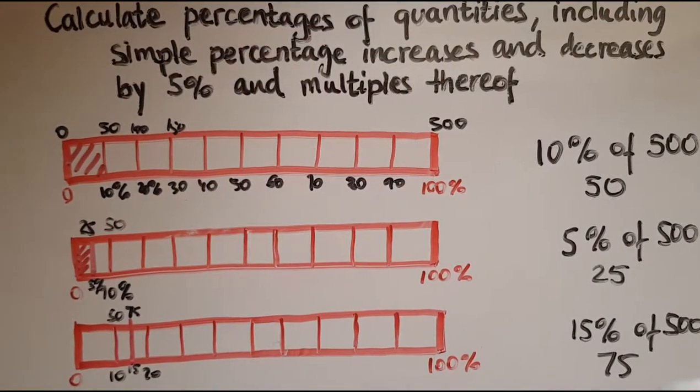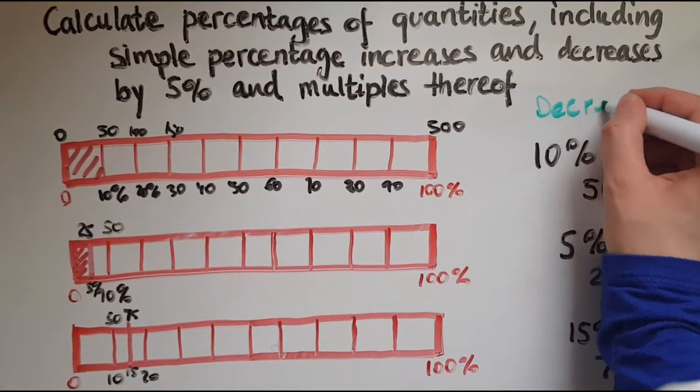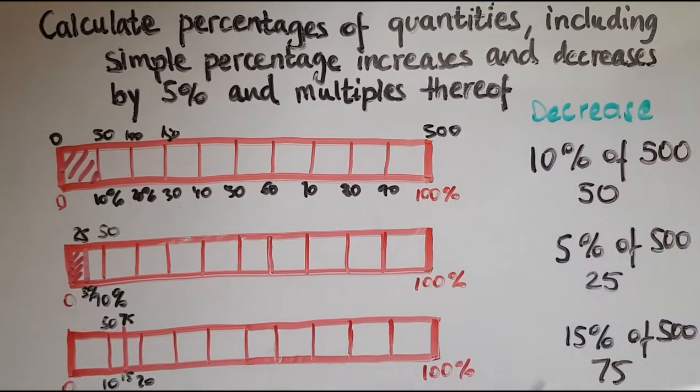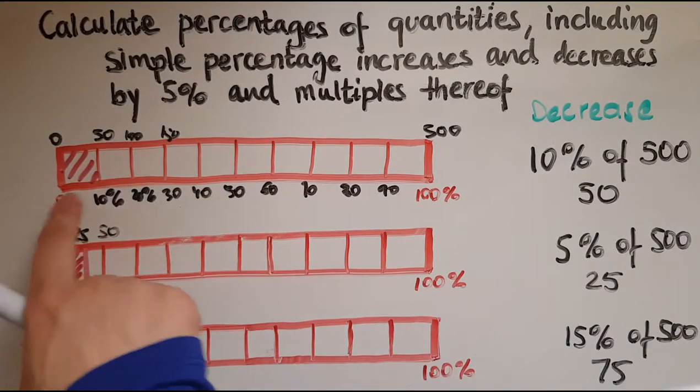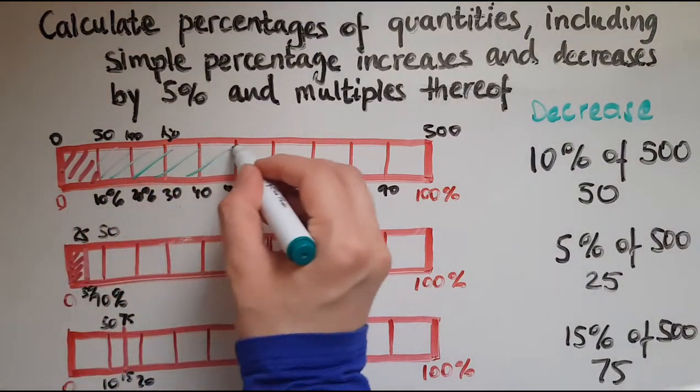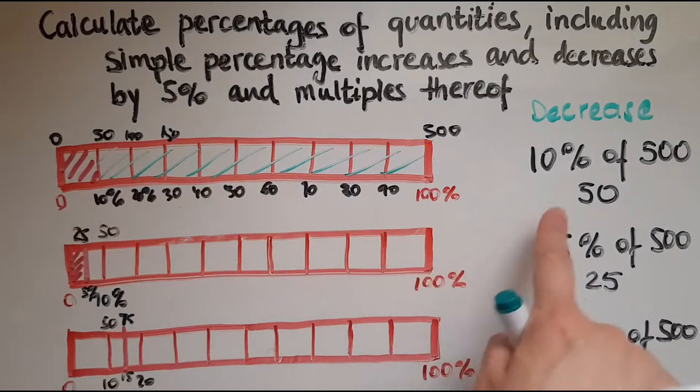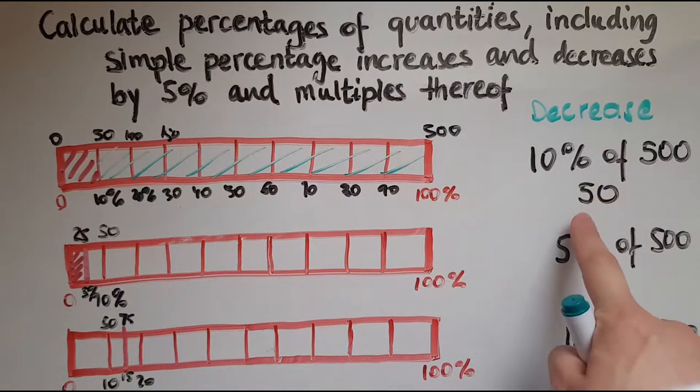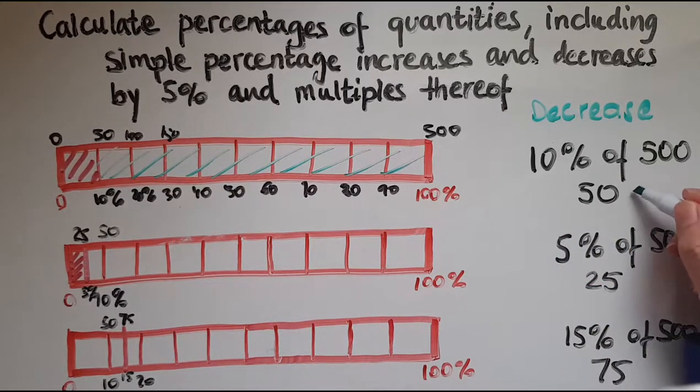Well, now look at decrease. So if I wanted to decrease 500 by 10%, what would happen? We've got the 100%, that's 10%. So it's going down by 10%, so we only have the remainder, whatever is remaining. So how do I work it out? Since it's a decrease and going down by 10%, that means 500 is going down by 50. That means whatever is remaining, which is 450.